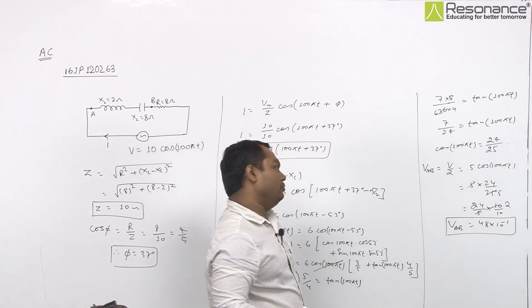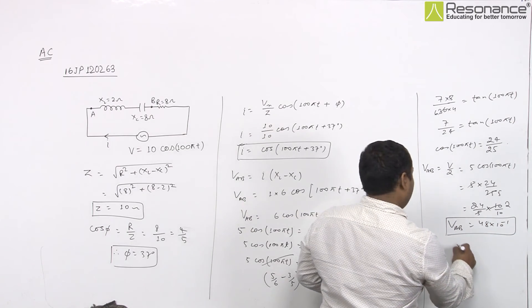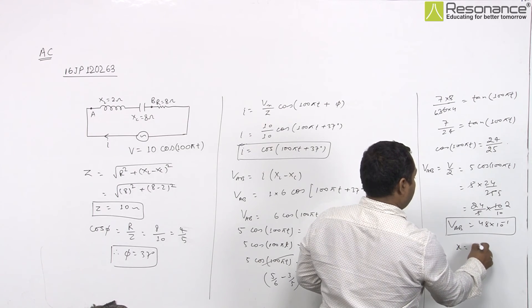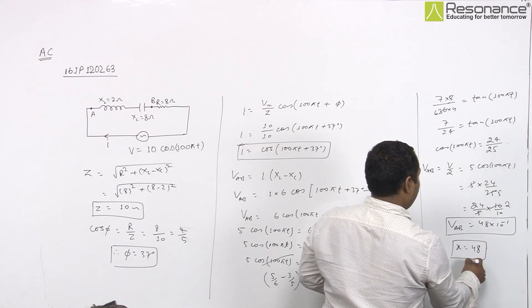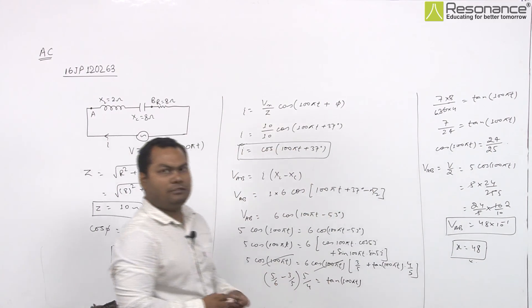So unknown value for this question, which is x, will be 48. This is our desired result.